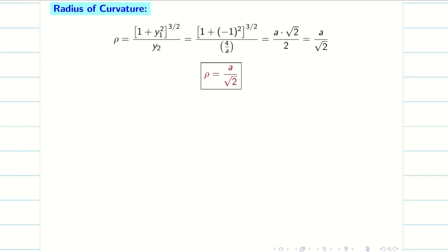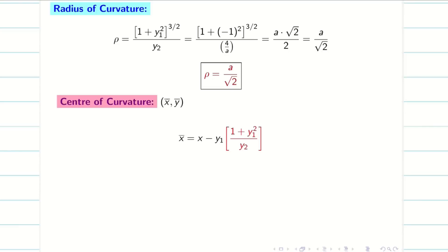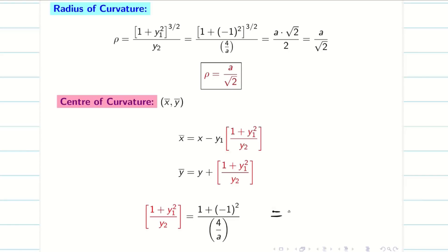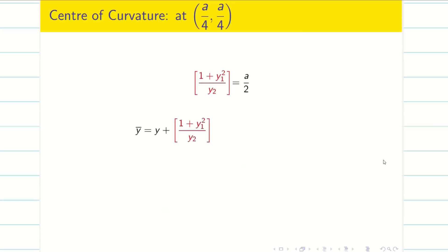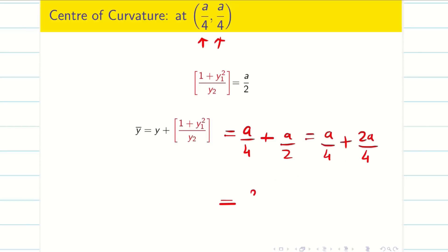Next we find the center of curvature (x̄, ȳ). The formula is x̄ = x − y₁·(1 + y₁²)/y₂ and ȳ = y + (1 + y₁²)/y₂. First compute (1 + y₁²)/y₂ = (1 + 1)/(4/a) = 2 · (a/4) = a/2. Finding ȳ first: ȳ = a/4 + a/2 = a/4 + 2a/4 = 3a/4.